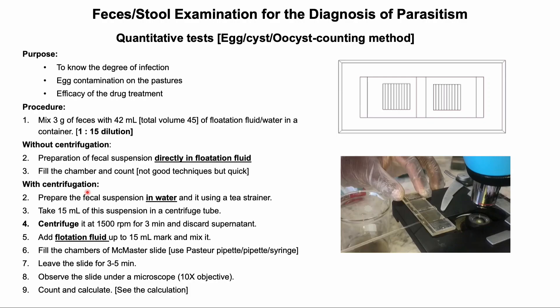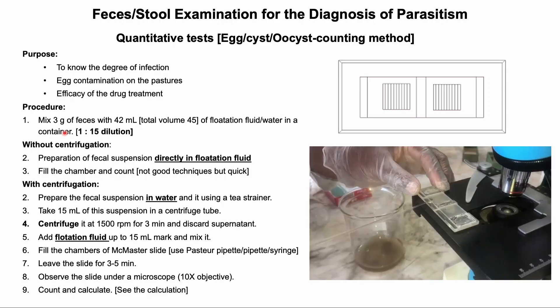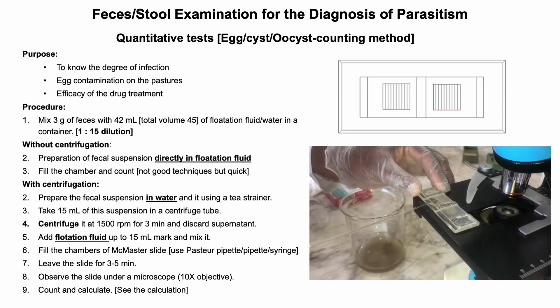The procedure of this test is simple and can be done with or without centrifugation of the sample. First, I will discuss the procedure without centrifugation. Dilute 3 grams of feces in 42 ml of flotation fluid — alternatively, 4 grams in 56 ml or 2 grams in 28 ml — maintaining a 1:15 ratio. Mix well and strain the fecal suspension using a tea strainer.